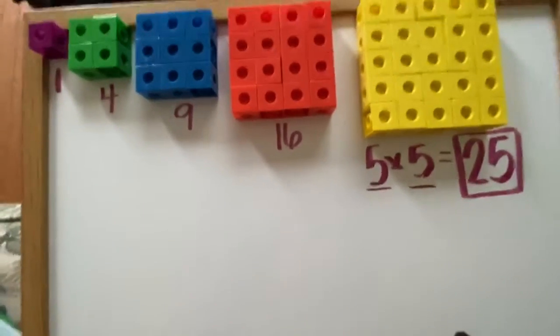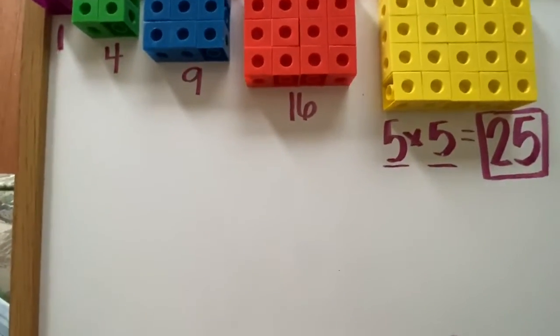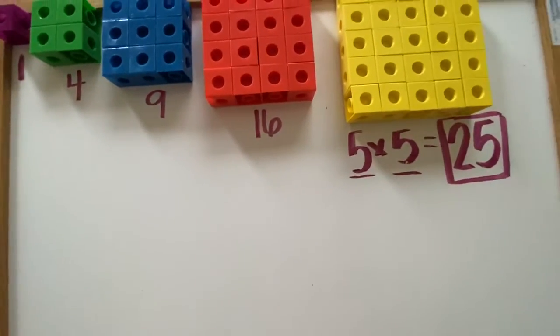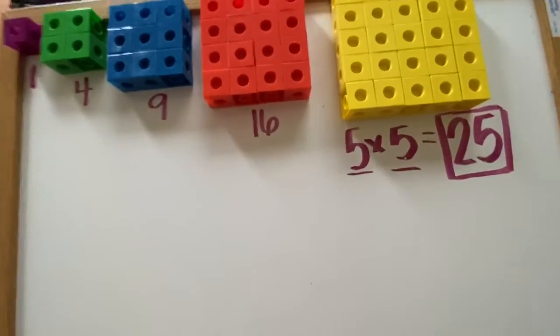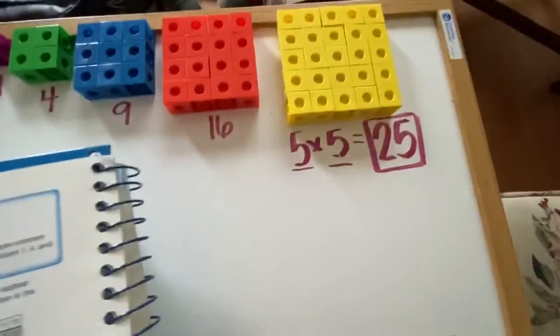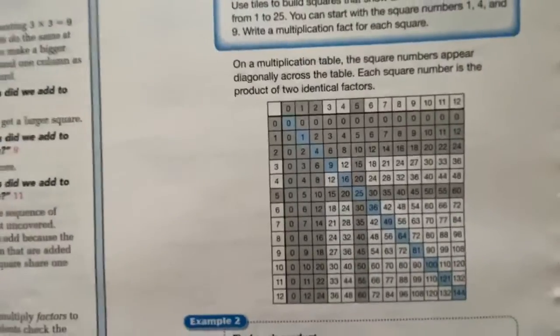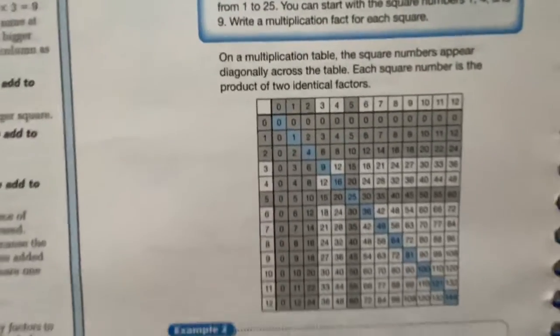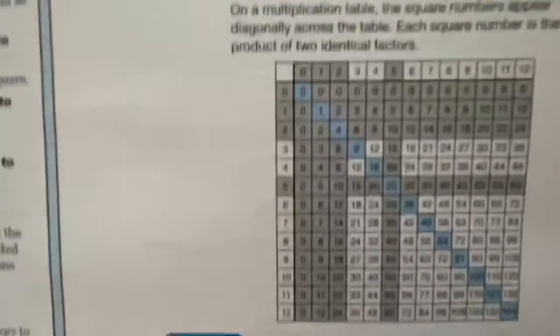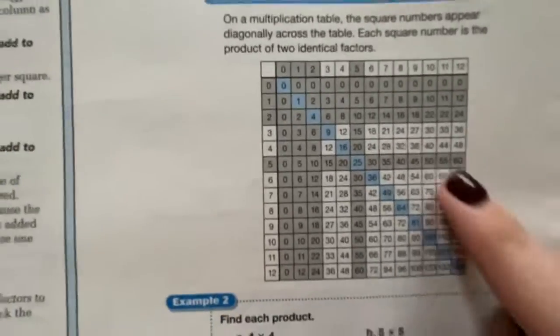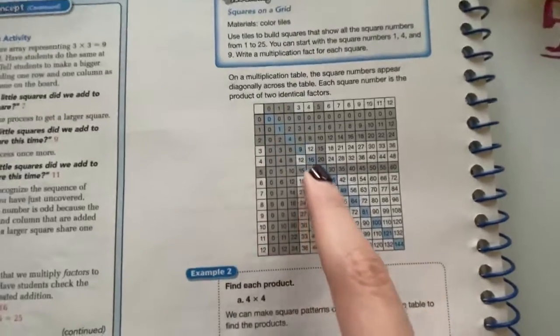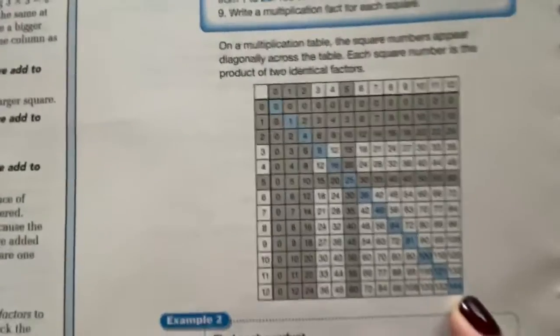Alright, so we are going to move on to if we were to look at our multiplication tables. Now, I do not know if you guys brought your multiplication tables home with you, but you can easily find multiplication tables either in your book or online. So, here we have our squared numbers going diagonal in blue.